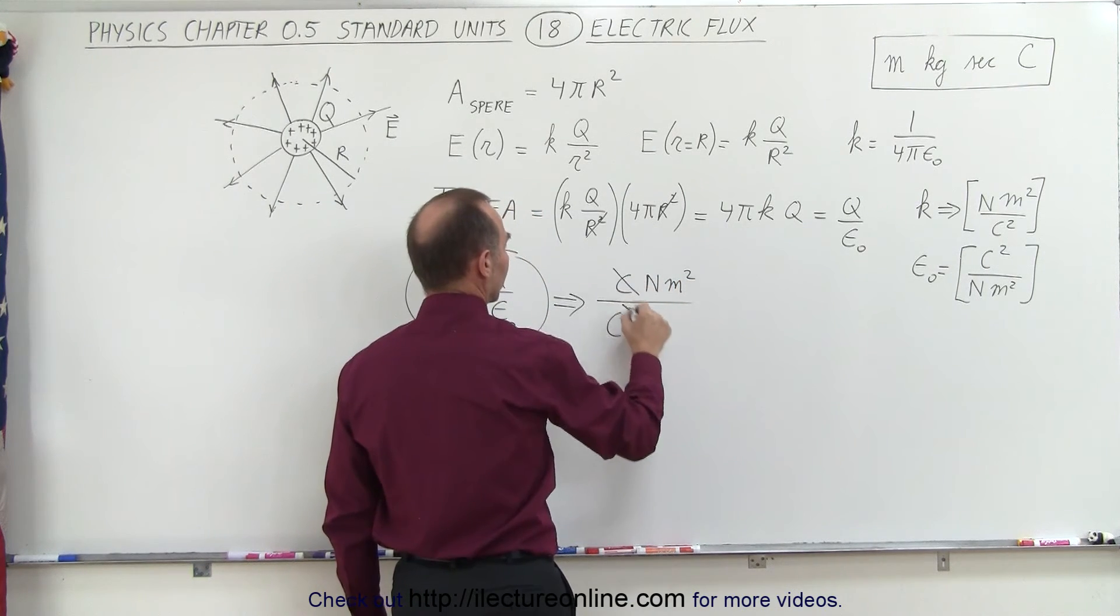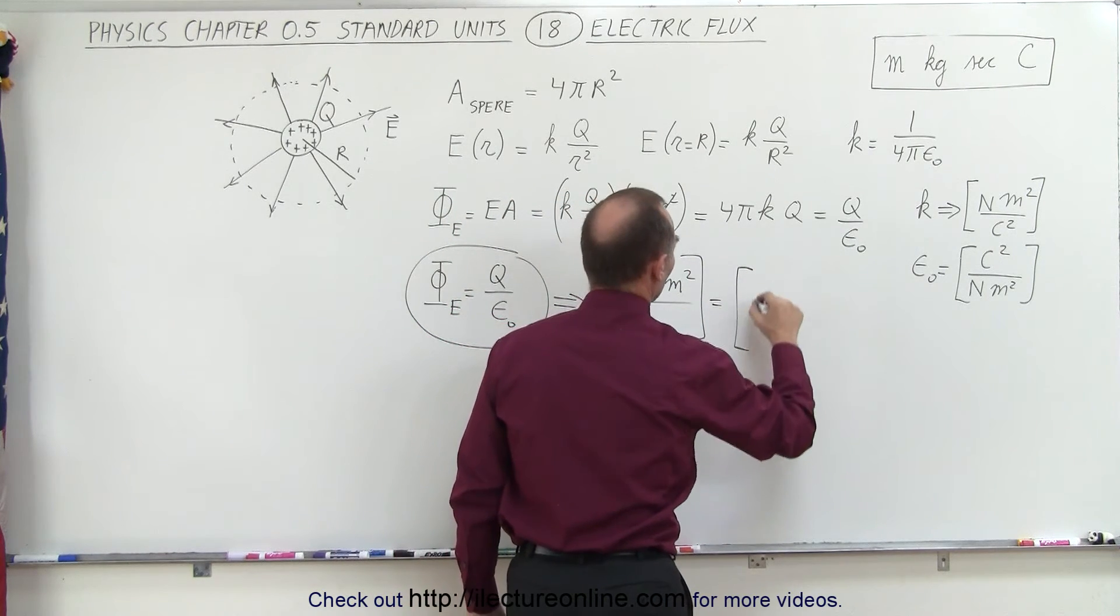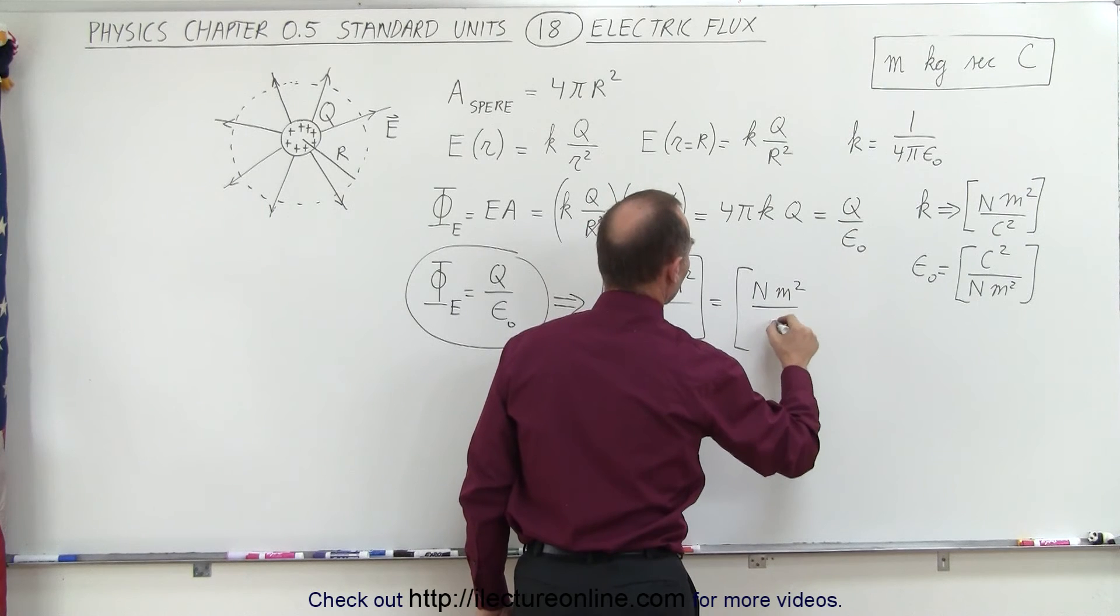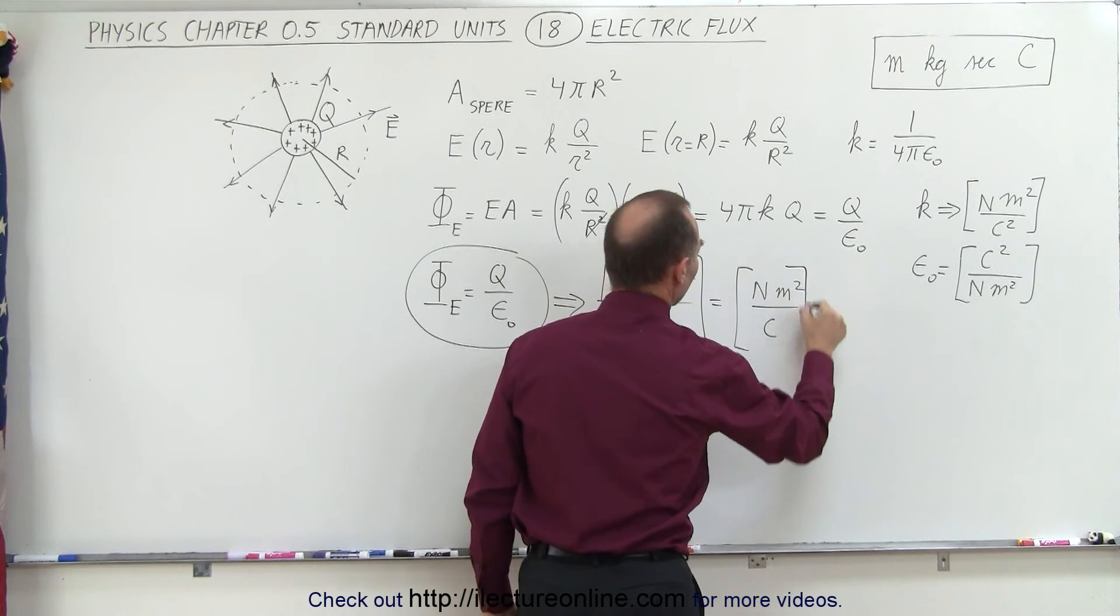Which means this cancels out that, and then we're left with the units of newtons, meters squared, divided by coulomb squared. Oop, no longer coulomb squared, the square is gone, divided by coulomb.